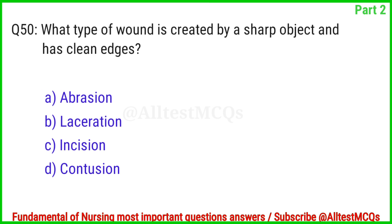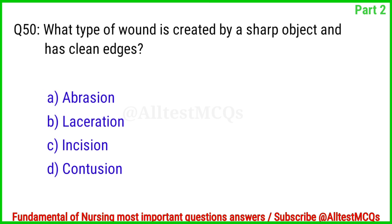Question No. 50. What type of wound is created by a sharp object with a clean edge? The right answer is Option C: Incision.